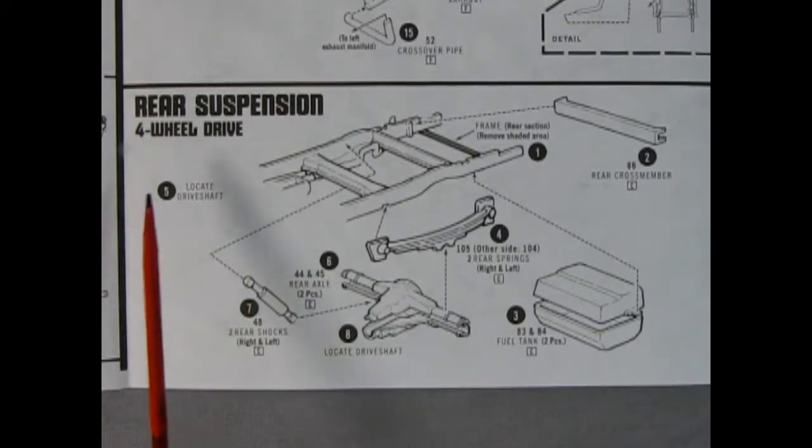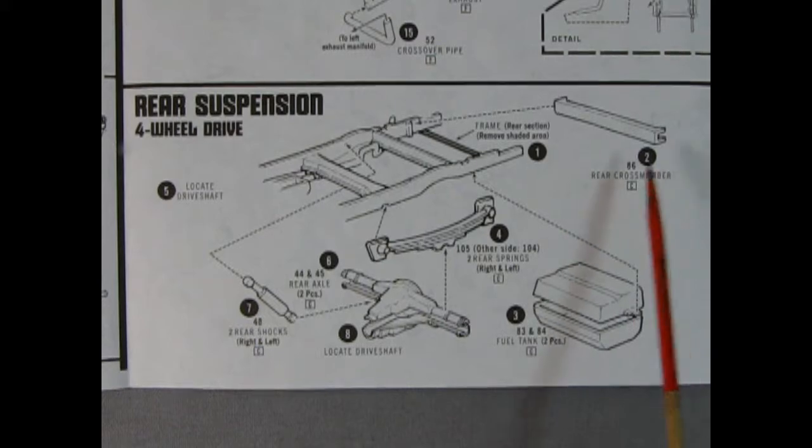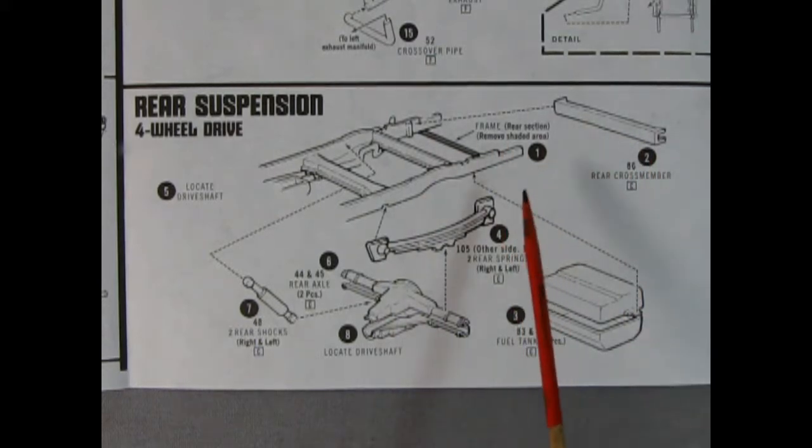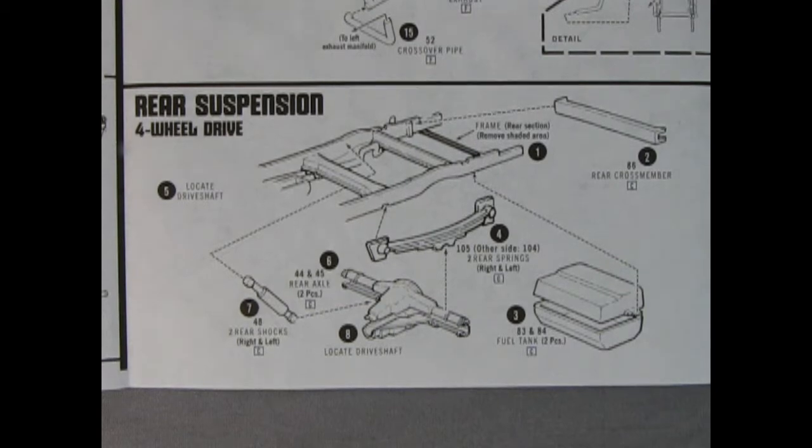And here is our rear four-wheel drive suspension which is basically a copy of the two-wheel drive. There's our brace across the back, going on to the frame with our two shocks, the upper and lower rear drive shaft as well as our two leaf springs and the two-piece fuel tank once again.